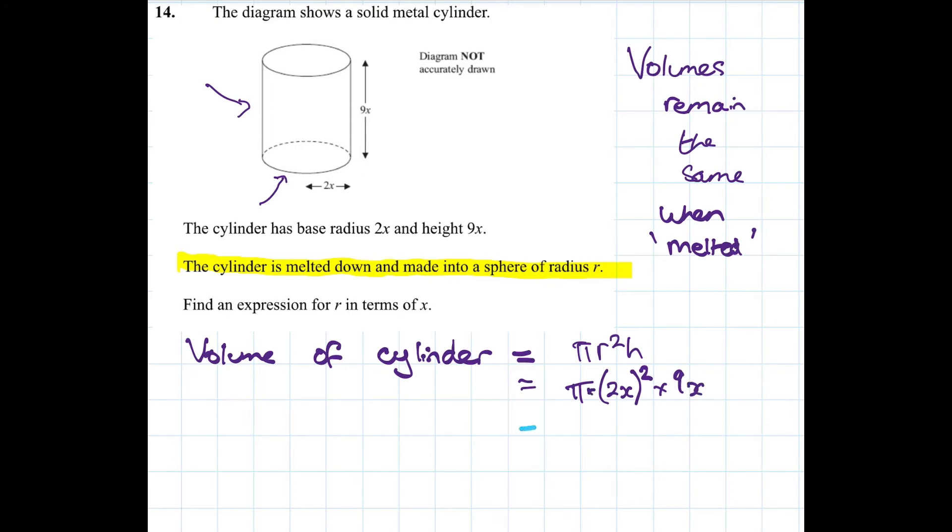So what does this give us? So it's π times 4x² times 9x and this is equal to 4 times 9 is 36, so it's 36x³, π times x³. Okay or 36πx³.